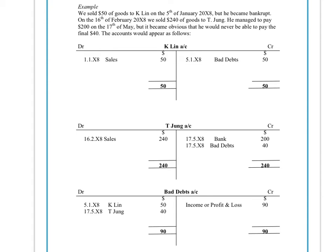Today we're going to look at the double entry for bad debts. Bad debts are basically debtors who we know, for some reason, will not pay us back the money. They're considered to be a bad debt because, as a result of us selling them goods on credit, when they don't pay us back, it's effectively the same as them dipping into your pocket as a business and taking the money — they've taken the cost of the goods and, as a result of non-payment, leave you short. From an accounting perspective, we would debit the profit and loss account in our income statement as an expense.